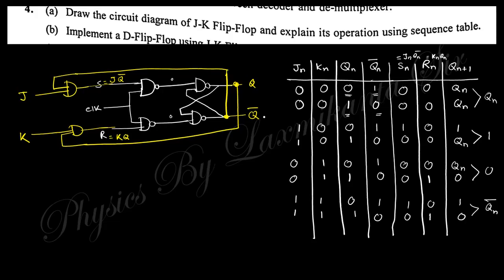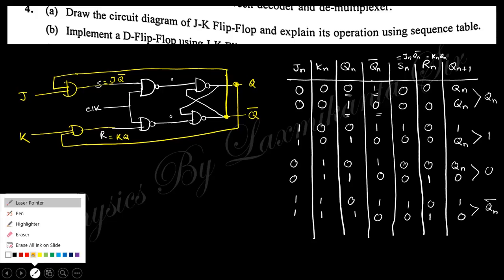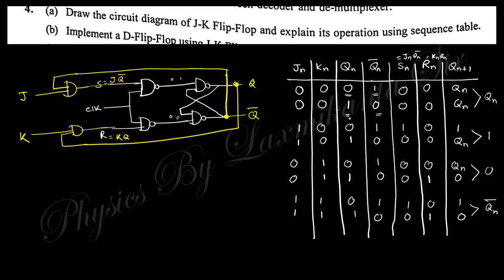When J=1 and K=0, with Qn=0 and Qn-bar=1: J=1, K=0, so this input becomes 0. Then this becomes 1, and this 1 and 0 combined with 1 and 1 gives output 1. With Qn=0 this is 1, so 0 and 0 gives 1, and 1,1,1 with 0 gives 1. Reversing: this is 1, this is 1, this is 0, this is 1, this is 1, and this is 0.